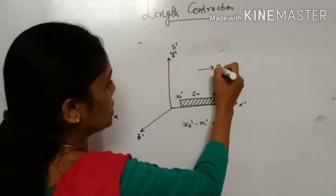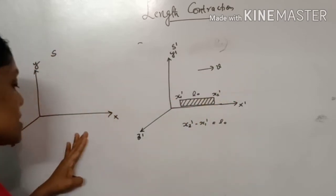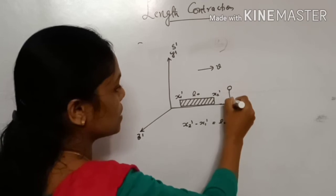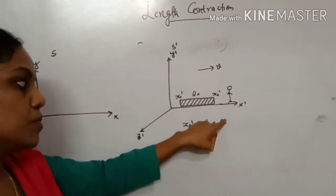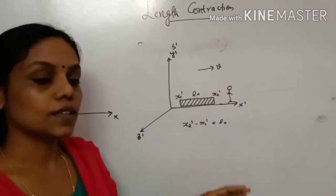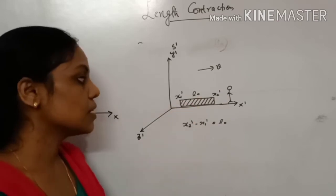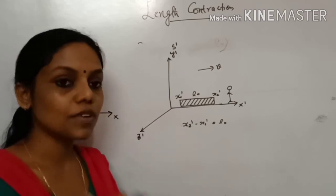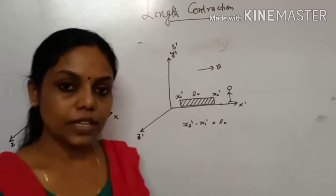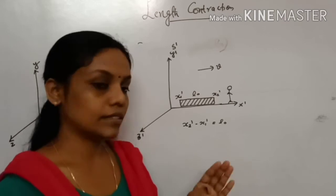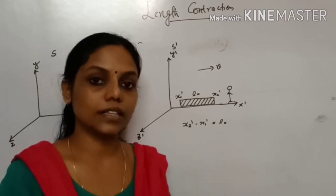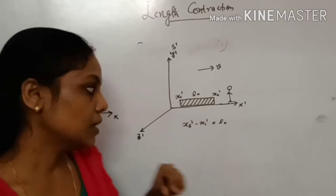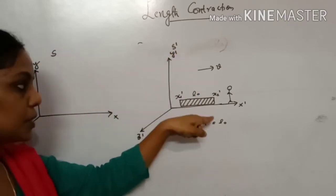The S' frame is moving with velocity V in the positive x direction, while the S frame is at rest. An observer in the S' frame sees the rod at rest relative to S', so the length L0 is the proper length. In the S frame, the observer measures the endpoints and finds x2 minus x1 equals L.